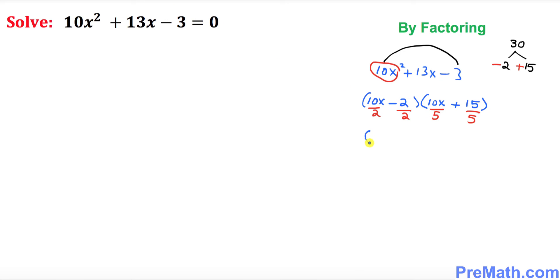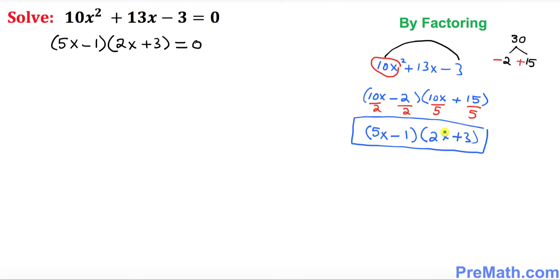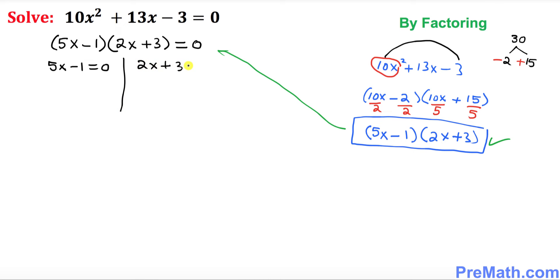Once you divide, you get (5x − 1) and (2x + 3) as your factors. Setting the factored form equal to zero and splitting: 5x − 1 = 0 and 2x + 3 = 0. For the first equation, bring the 1 to the other side to get 5x = 1, then divide by 5.